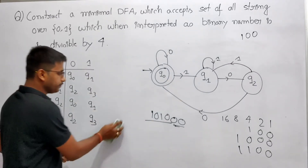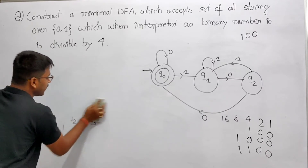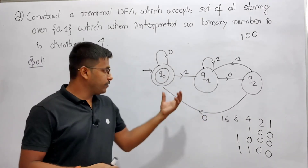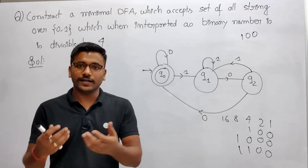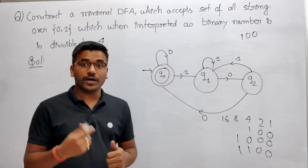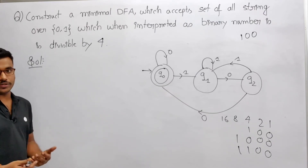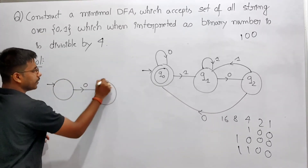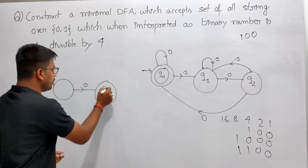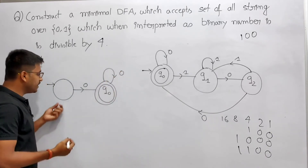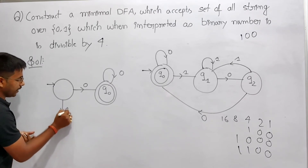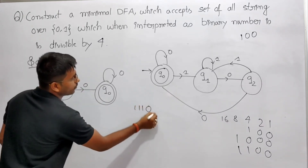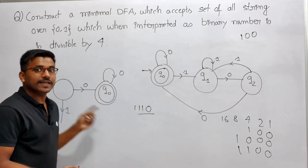Now let's construct a minimal DFA where epsilon does not belong to the language — i.e., don't consider epsilon as 0. In interviews, some IITs may ask you this variant. When not considering epsilon as 0, the initial state is not the final state. By getting a 0, you go to a new state which is the final state, since a single 0 is also divisible by 4. Any number of 0s is accepted, so that state loops on 0. If this state gets a 1, go to another state — don't make a loop of 1 here, because that would let strings like any-number-of-1s then 0 get accepted, which don't end with two 0s.